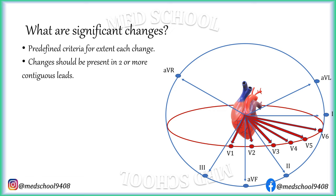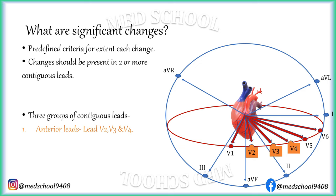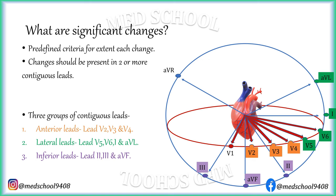You must be thinking what are contiguous leads — you already know this, just the word is new. There are three groups of contiguous leads. Anterior leads, which are V2, V3, and V4, depict changes in anterior wall ischemia. Lateral leads, which are V5, V6, I, and aVL, depict lateral wall ischemia. And inferior leads, which are II, III, and aVF, depict inferior wall ischemia.